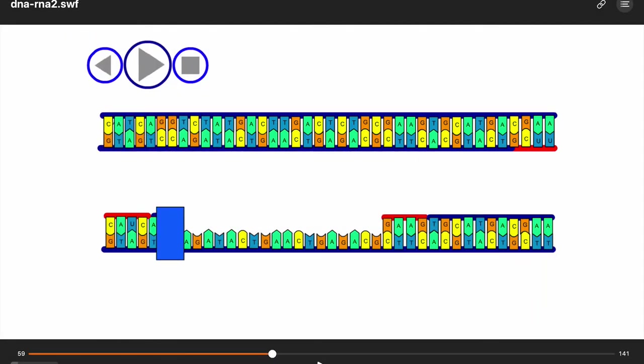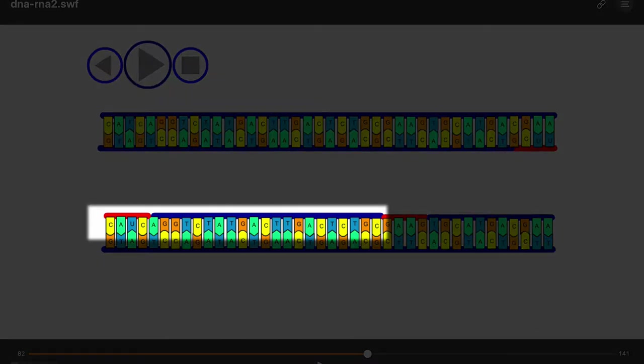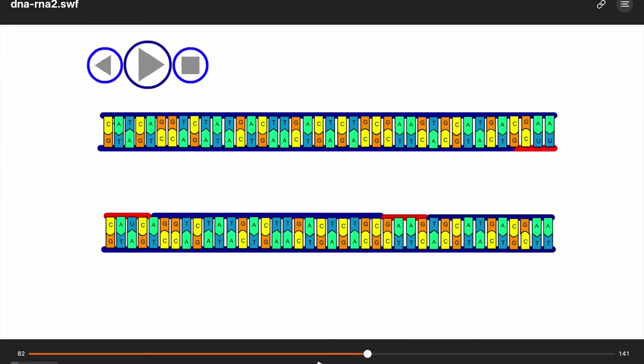In the lagging strand, several DNA fragments called Okazaki fragments form. When all of the DNA has been copied, there remains some cleaning to do. The RNA must be replaced with DNA, and the Okazaki fragments must be joined together.